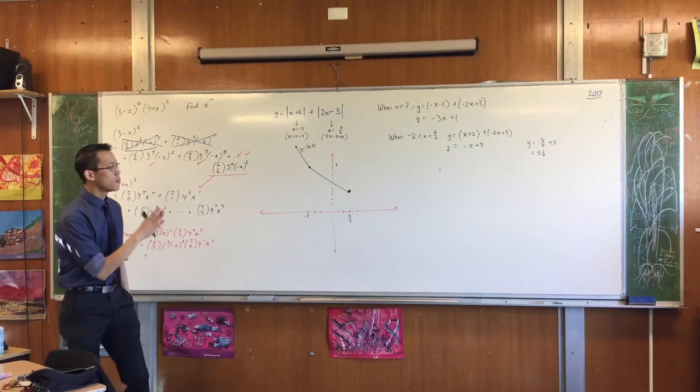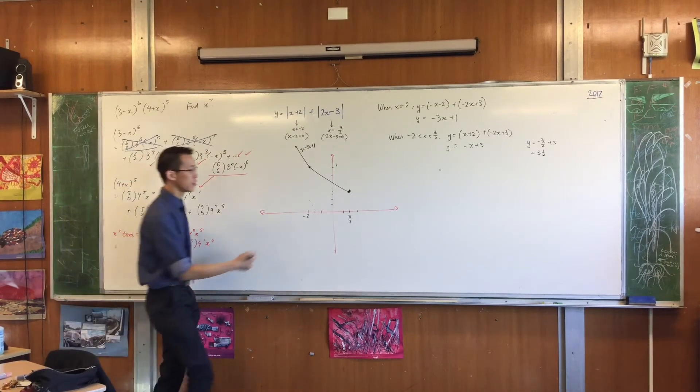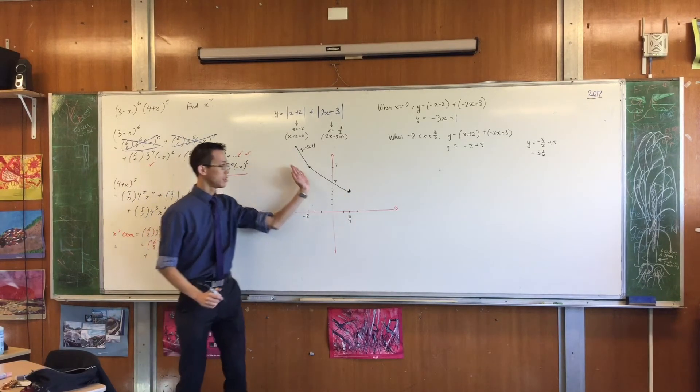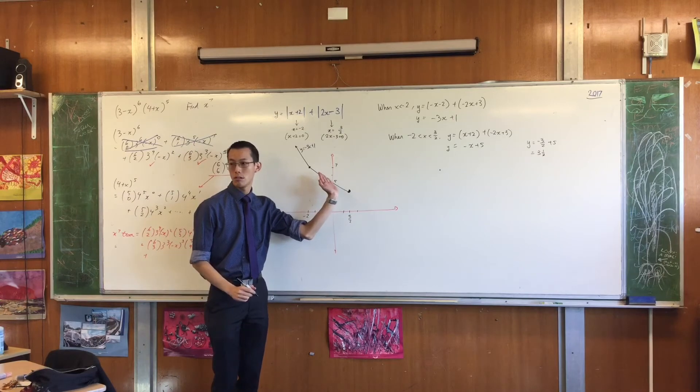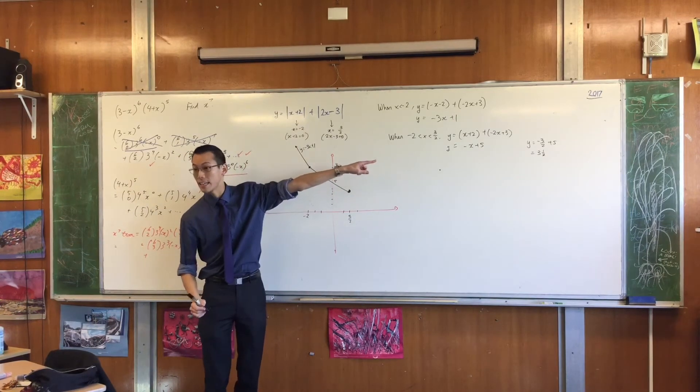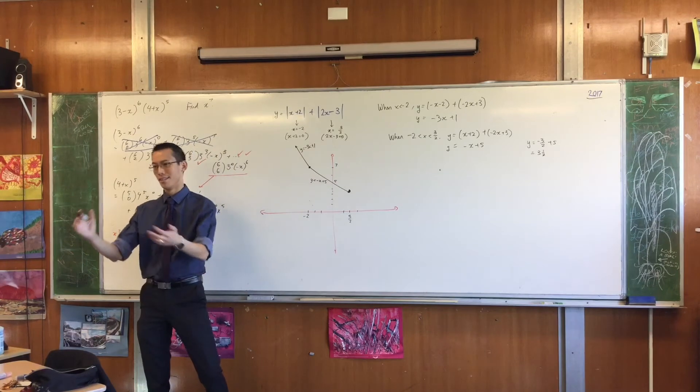Now, before I move on, do you notice this is exactly what you ought to expect? Look, there's five. There's the intercept, right? See how this is super steep? This is not so steep. Why not? The gradient is not negative three. The gradient is negative one, which I'm going to label on there.